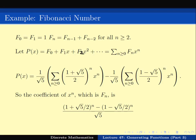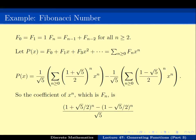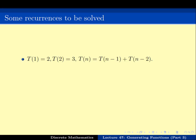To summarize the method: write the generating function as a power series, use the recurrence relation to express P(x) as a closed-form function of x, write down the Taylor series expansion using tricks such as partial fractions, and then read off the coefficient of xⁿ to get Fₙ. As an exercise, try to apply this to the recurrence T1 = 2, T2 = 3, Tₙ = Tₙ₋₁ + Tₙ₋₂ on your own.